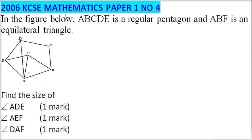Find the size of angle ADE, AEF and DAF. So the information we have here is that this is a regular pentagon. A pentagon has 5 sides and we are told that ABF is an equilateral triangle.